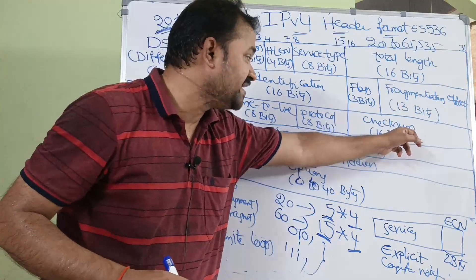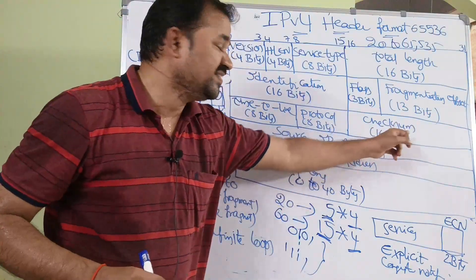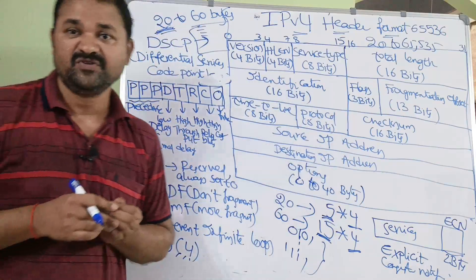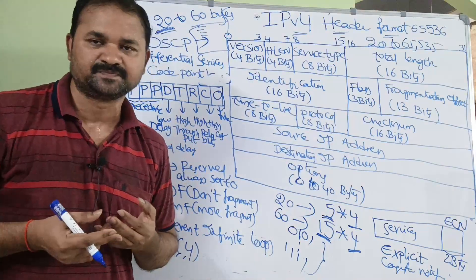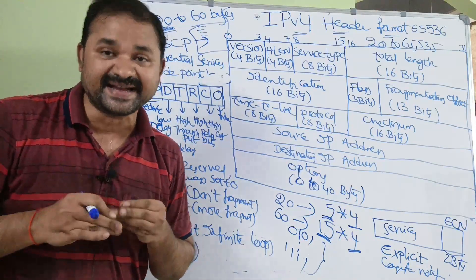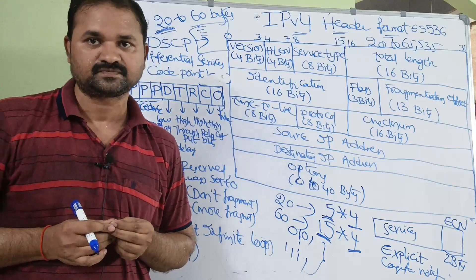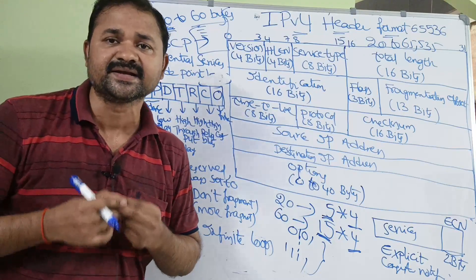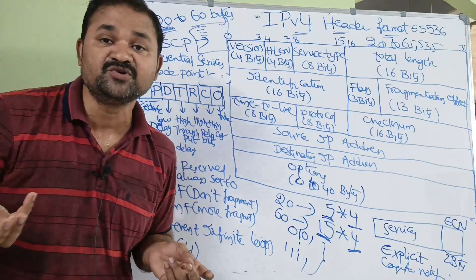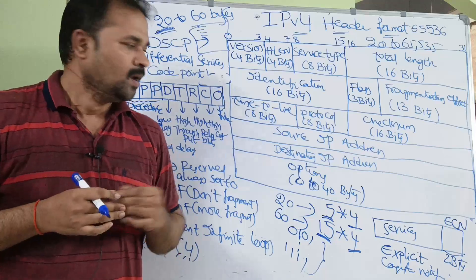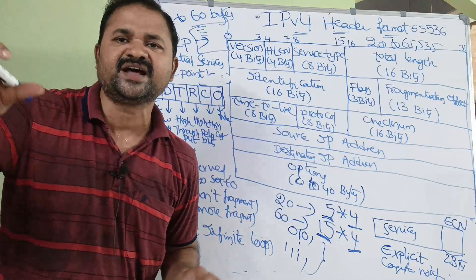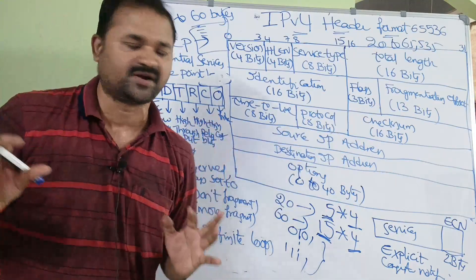And the next one is Checksum, which is of size 16 bits. Checksum is mainly useful for error detection. The receiver uses the checksum mechanism in order to check if there are any errors or not.